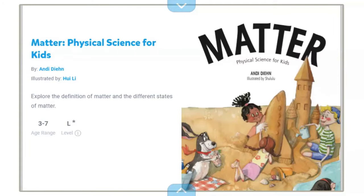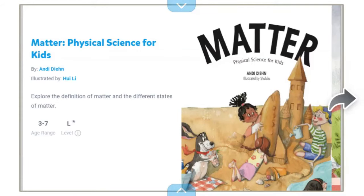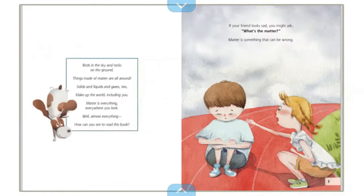Matter: Physical Science for Kids, by Andy Dye. Birds in the sky and rocks on the ground — things made of matter all around. Solids and liquids and gases make up the world, including you. Matter is everything, everywhere you look — well, almost everything.